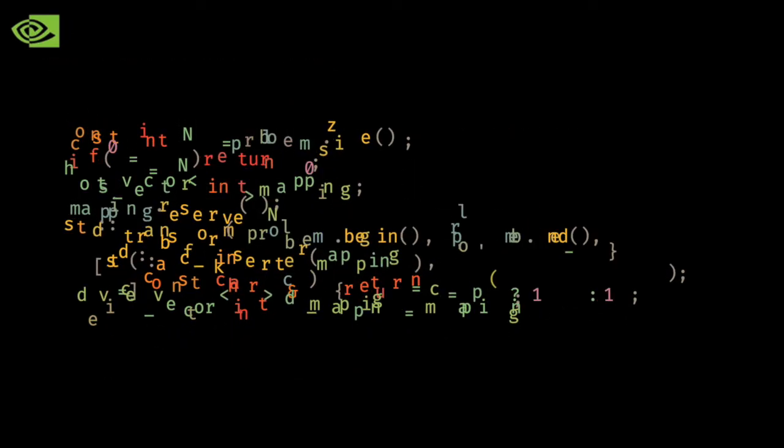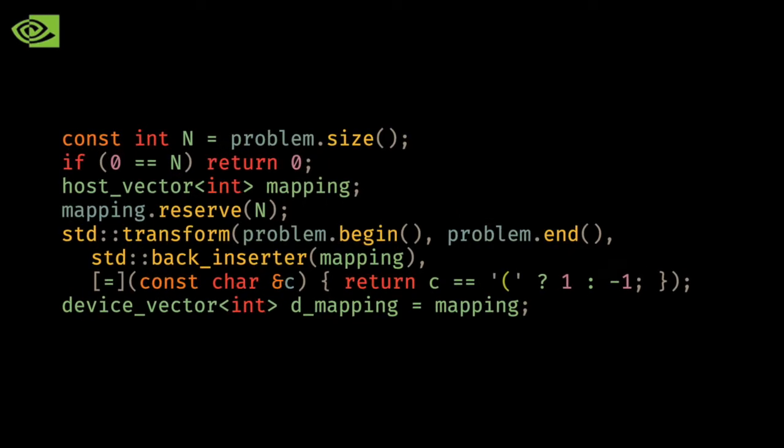First I grab the problem size so I don't have to keep repeating myself, and I check to make sure our problem size is greater than zero. I then transform the string into integers and copy the data to the GPU device. This step is just like the BQN solution up until this point.